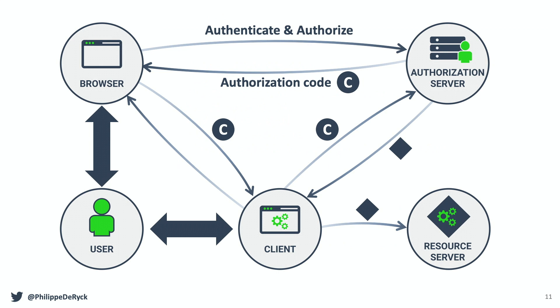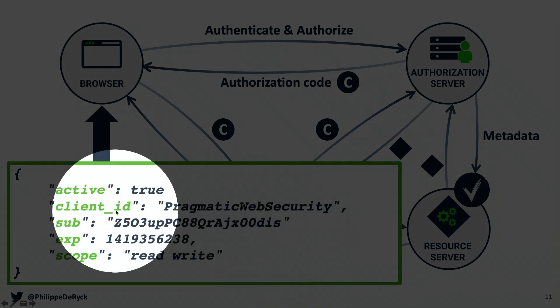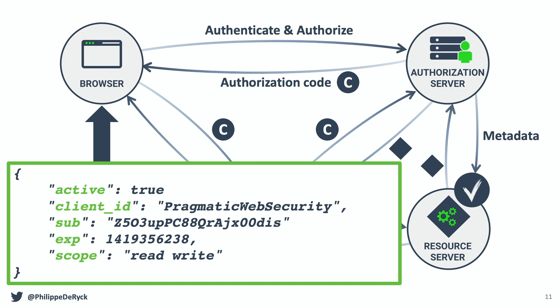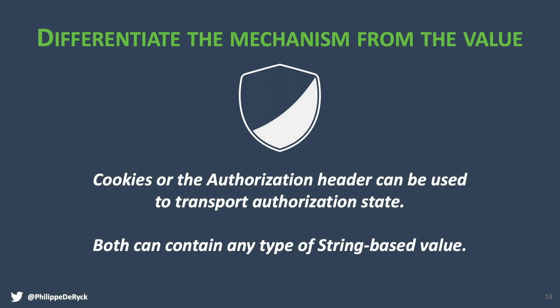OAuth also supports reference tokens. With a reference token, the token is a random string that means nothing to the resource server. The resource server has to go back to the authorization server and ask what this token represents. The authorization server responds with the associated data. This illustrates why the cookies-versus-tokens discussion doesn't make sense. You have to distinguish between the mechanism — how you transport and store the value — and the value itself, which can either refer to server-side state or be a self-contained token like a JWT. The rest of this talk focuses on storage and transport mechanisms and their implications.